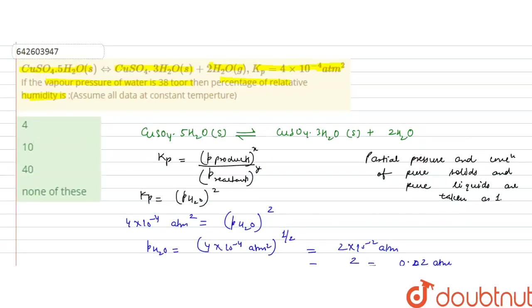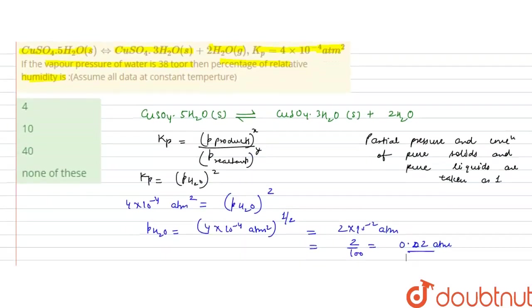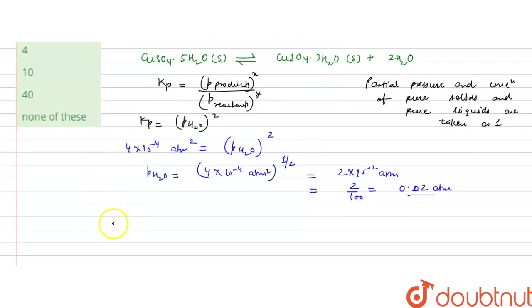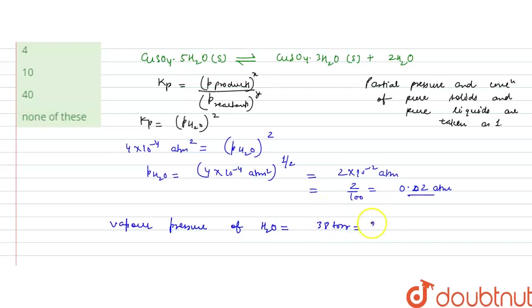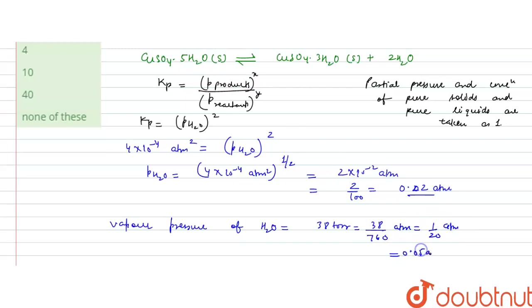One thing given in the question is that the vapor pressure of water is 38 torr. We will convert this to atmosphere by dividing by 760, which gives 38/760 = 1/20 atmosphere, or 0.05 atmosphere.